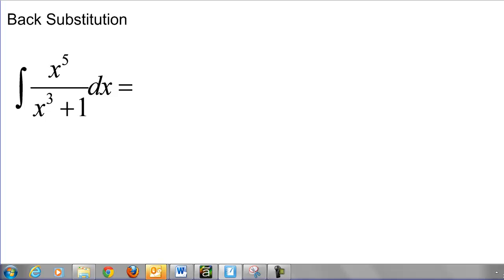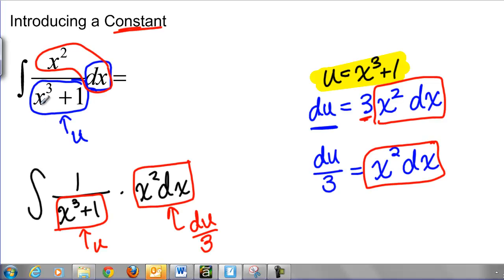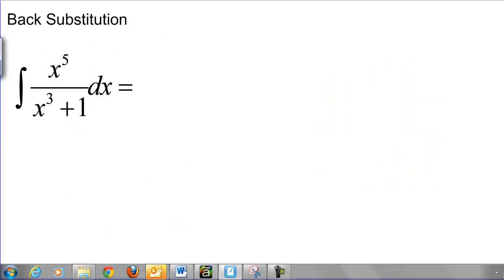This problem looks kind of similar to a previous problem that we did, the x squared over x cubed plus 1, but now we have an x to the fifth on top. So can we do the same substitution we did before?